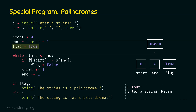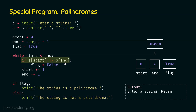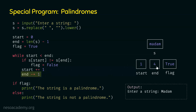After this, we check: is start less than end? Yes, zero is less than four. Therefore this statement is executed: is it the case that s[start] is not equal to s[end]? No — this letter m is equal to this letter m. Therefore this condition is not satisfied. So start is incremented by one — this becomes one — and end is decremented by one — this becomes three. Now start is pointing to the second letter and end is pointing to the second-to-last letter.